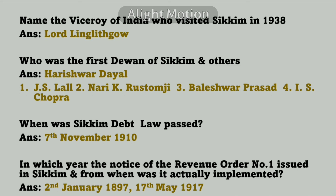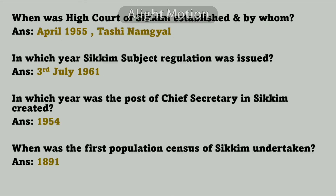When was the Sikkim Debt Law passed? It was passed on 7th November 1910. In which year was the Revenue Order Number One issued in Sikkim? It was issued on 2nd January 1897, and it was actually implemented from 17th May 1917.